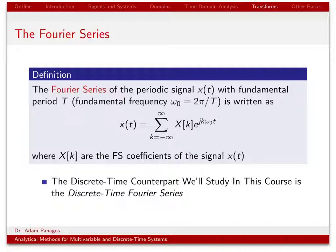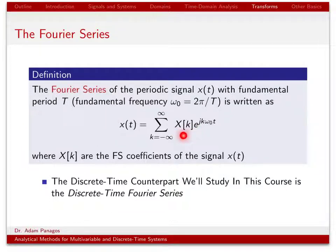Now that we've reviewed some basics about frequency and complex numbers, let's review some transforms you're already familiar with. The first is the Fourier series, which we use to compute the frequency domain representation of periodic signals. A signal with period T has fundamental radial frequency omega-naught equal to 2 pi over T. The Fourier series representation uses coefficients capital X of K, known as the Fourier series coefficients of the signal.